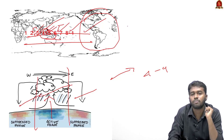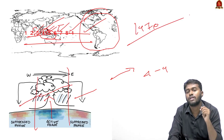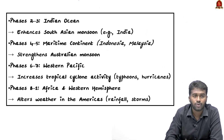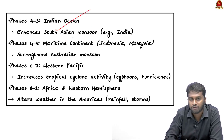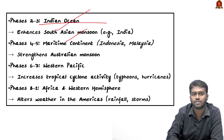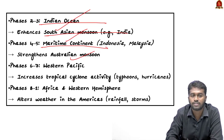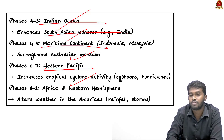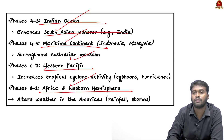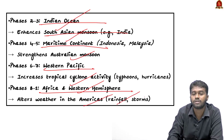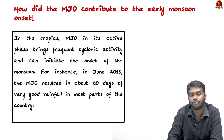Those are the different phases of the Madden-Julian Oscillation. Importantly, this phenomenon was discovered in the year 1970 by Paul Julian and Ronald Madden. To summarize the active phases: phase 2-3 is over the Indian Ocean enhancing the South Asian monsoon; phase 4-5 is over the maritime continents enhancing the Australian monsoon; phase 6-7 is over the western Pacific increasing cyclonic activity; and phase 8-1 covers the western hemisphere including Africa, resulting in increased rainfall, storms, and cyclones across the Americas.